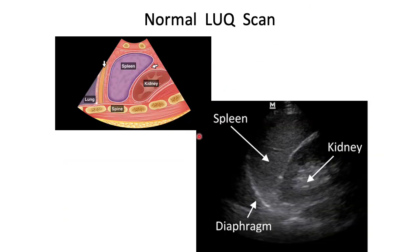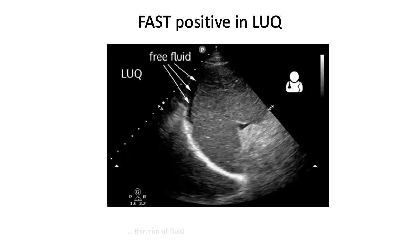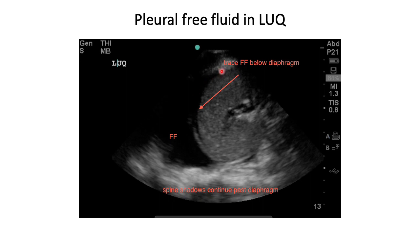In the posterior axillary line with the probe marker towards the head, you will see the diaphragm, then the spleen, and then the kidney. For a FAST positive in the left upper quadrant, free fluid normally appears between the spleen and kidney; however, free fluid can also appear above the spleen on the left side or above the liver on the right side. Another example shows free fluid just above the spleen with a massive pleural effusion — in the context of trauma, this is hemothorax.